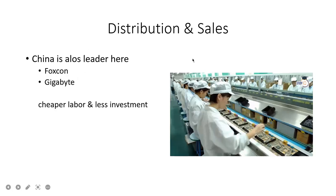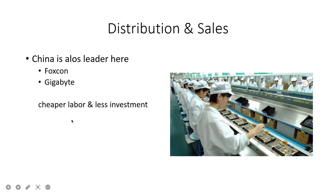When we talk about distribution and sales, China is also a leader here. Companies like Foxconn and Gigabyte manufacture motherboards, hard disks, and other chips, handling assembling and selling due to cheaper labor and less investment. Distribution and sales are rising too much nowadays in China.